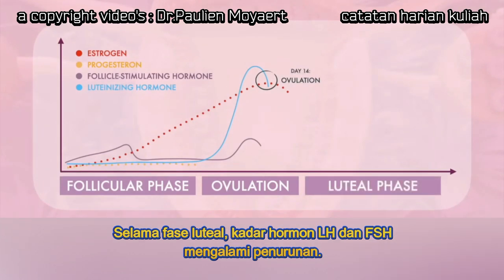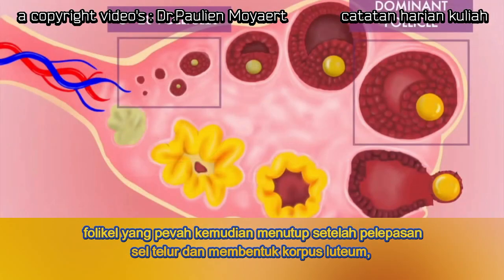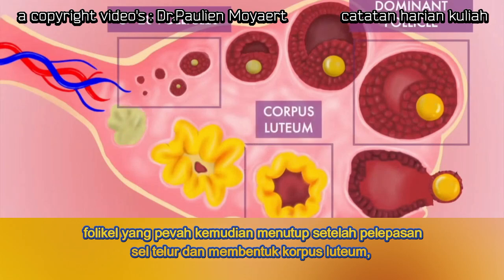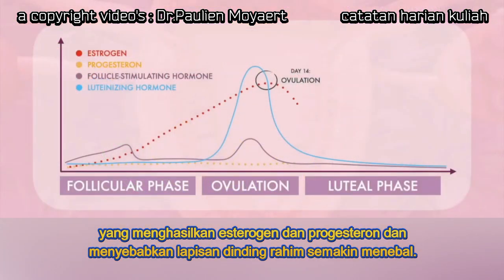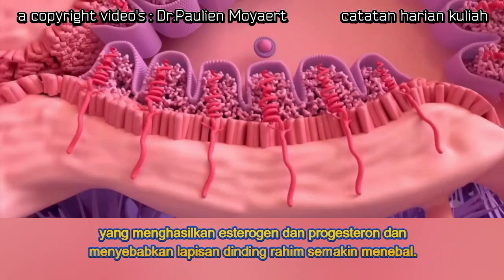During the luteal phase, the levels of luteinizing hormone and follicle-stimulating hormone decrease. The ruptured follicle closes after releasing the egg and forms a corpus luteum, which produces estrogen and progesterone, causing the lining of the uterus to thicken even more.